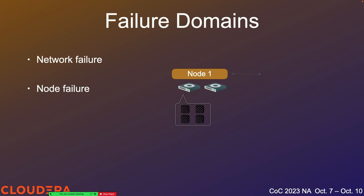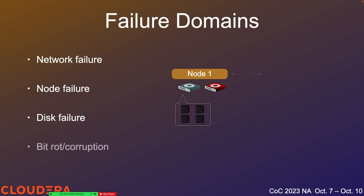The reason network failures and node failures are closely related is that once the network is partitioned between node 1 and node 2, node 1 has no idea if node 2 is still up and running but unreachable, or if node 2 has failed completely. The next failure type is disk failures — this is when one drive within a node fails completely but the node's process is still up and running. We'll also talk about bit rot and corruption within an otherwise functioning disk.